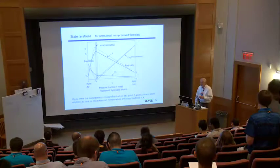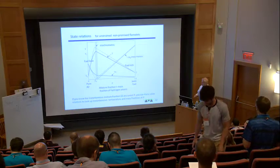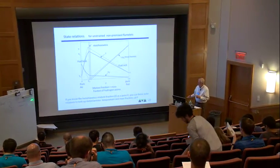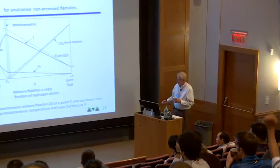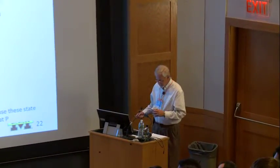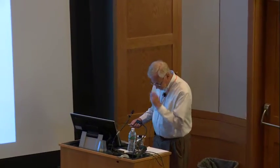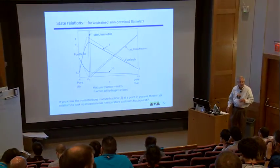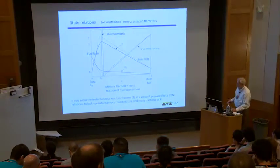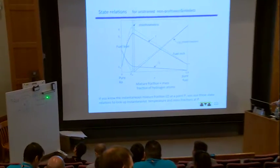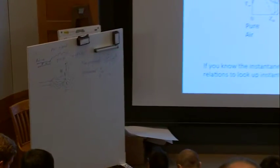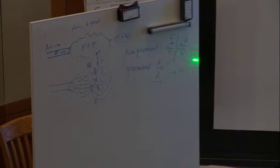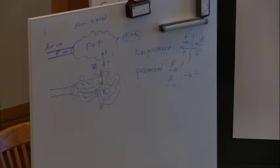To talk about turbulent combustion concepts — a question that was asked just a minute ago: let's be careful about what we mean by non-premixed and premixed. When I say premixed flame, the fuel is coming to the right and the air is coming to the right — they're both mixed together, and the products are going out to the right. Non-premixed: the fuel is coming to the right, but the air is coming in from the left, and the products are going away from the flame in both directions.